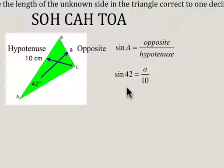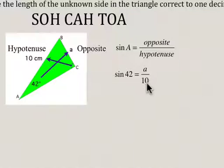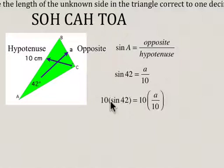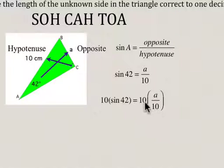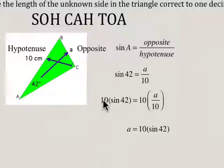Now we're going to use algebra to solve for A. Since this is A over 10, we have to use the opposite operation, which is multiplication. So we multiply both sides by 10 — the 10s cancel out — and we're left with A equals 10 times sine 42.